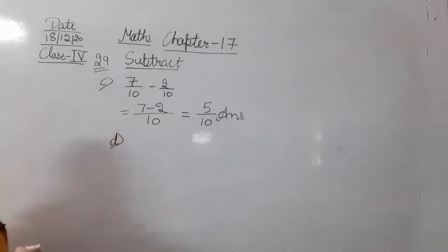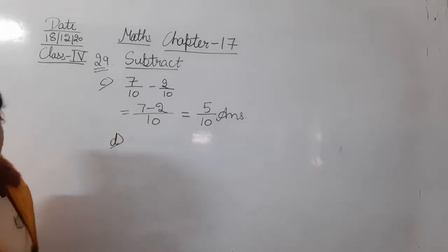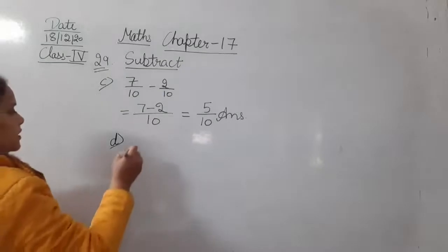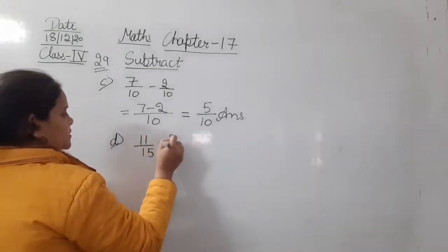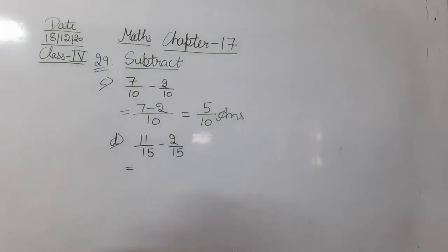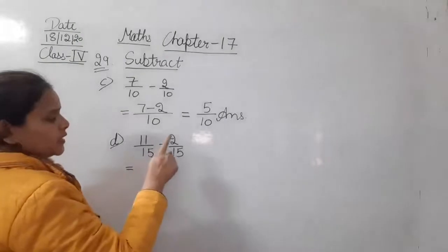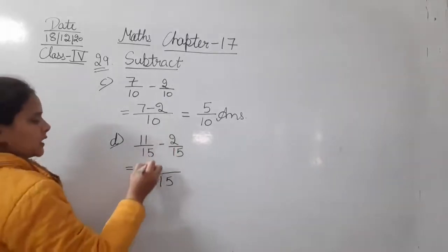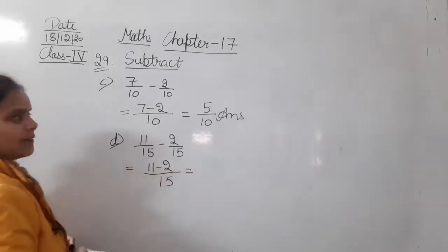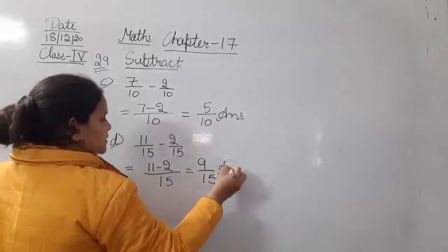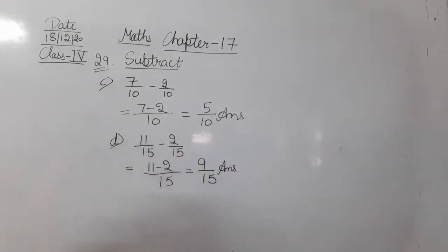Moving to the D part. The D part is 11 upon 15 minus 2 upon 15. Again, we take the common denominator, 15. Now we subtract the numerator: 11 minus 2 will be 9. So the answer is 9 upon 15.